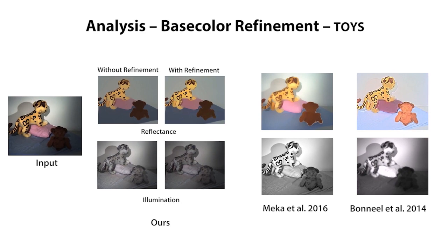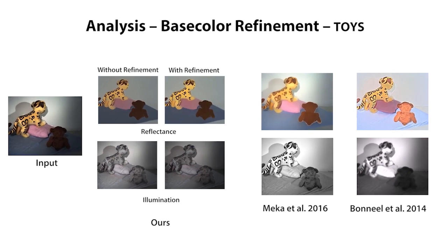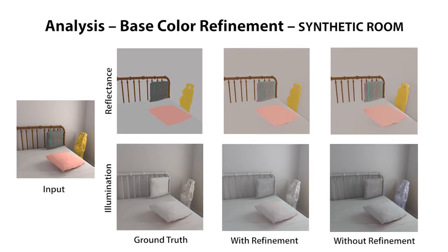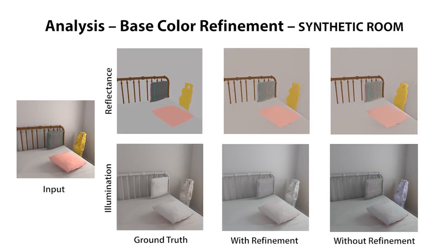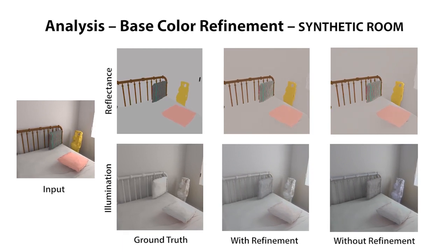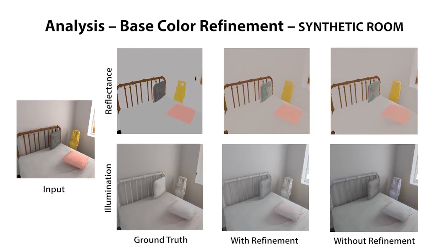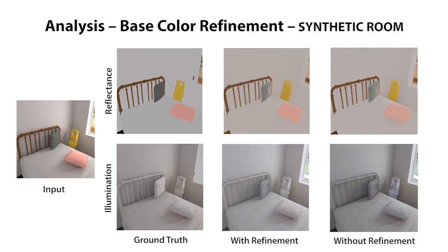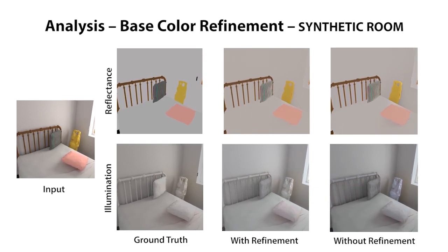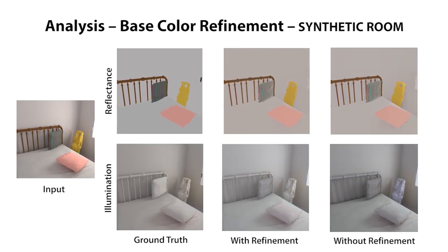The other techniques produce non-uniform illumination while missing shadows. We show the benefits of the base color refinement on a synthetic sequence. Without the refinement, note the inaccurate blue lighting on the statue, the bed post and the pink cushion. Note that with the refinement, our results are closer to the ground truth decomposition.